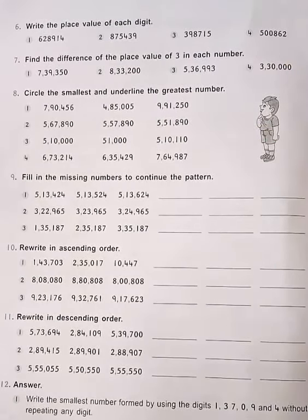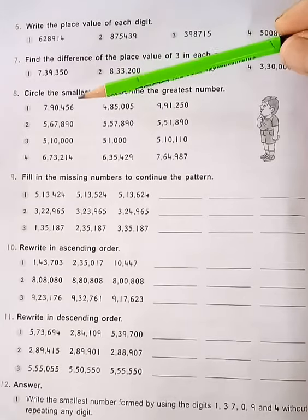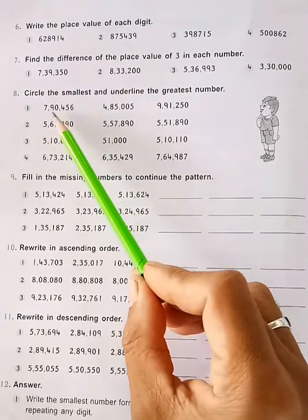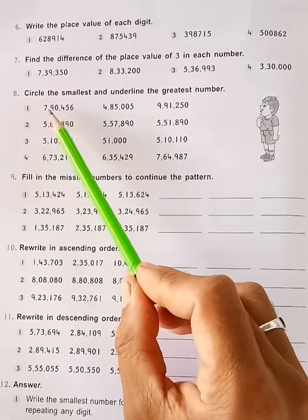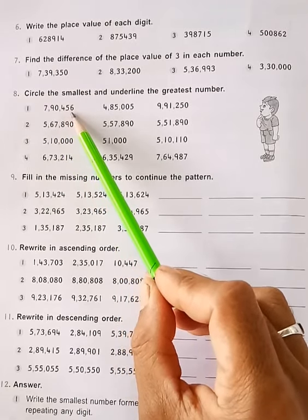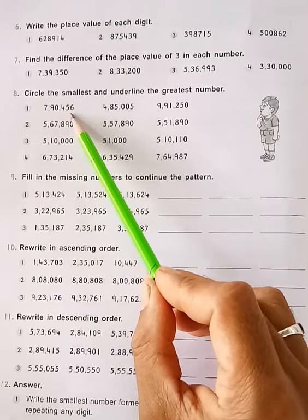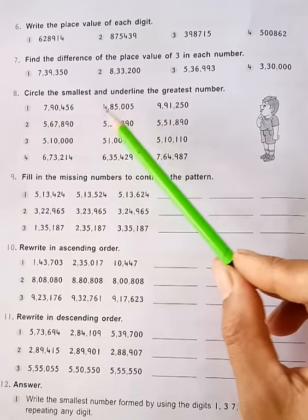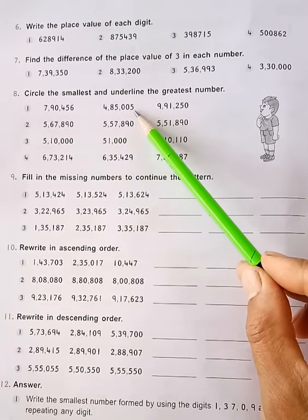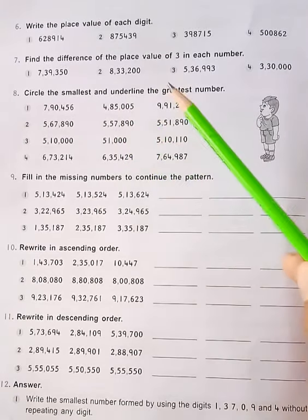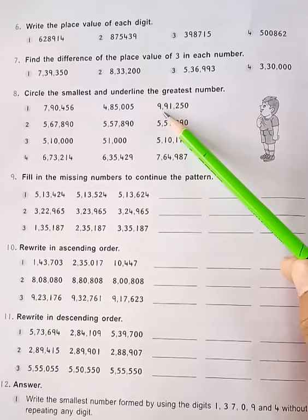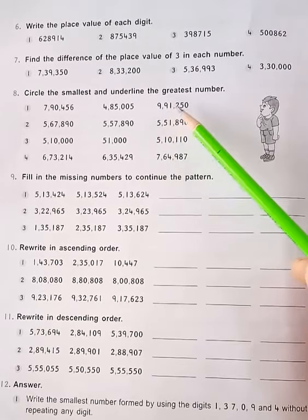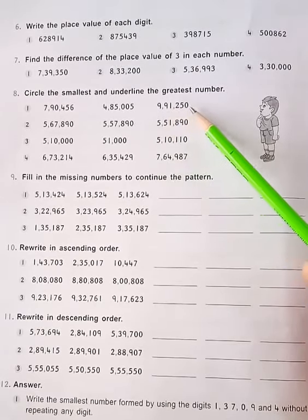To solve this problem, you have to read the numbers carefully. The first number is seven lakh ninety thousand four hundred fifty six. The next number is four lakh eighty five thousand five. The last number is nine lakh ninety one thousand two hundred fifty.